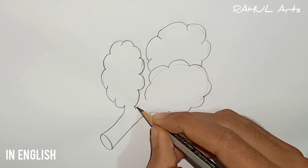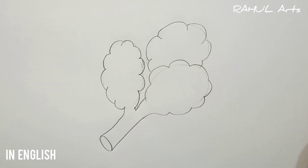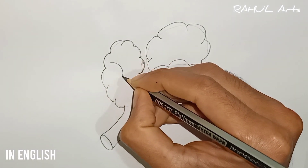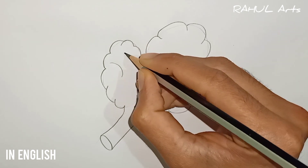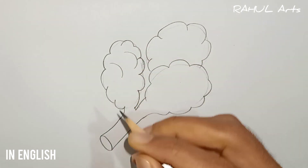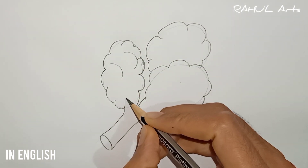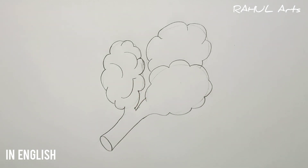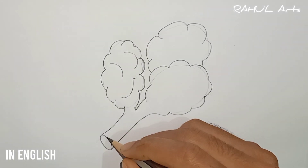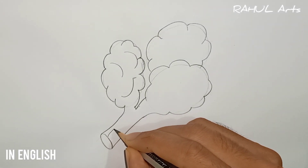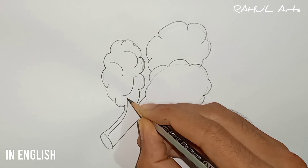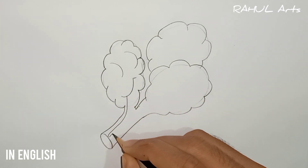Join the third cloudy structure with the first one, and then draw some bubble-like structures to make it look like alveolar sacs.